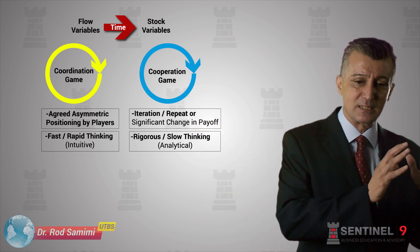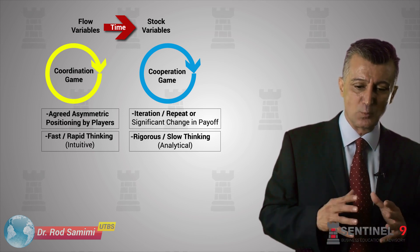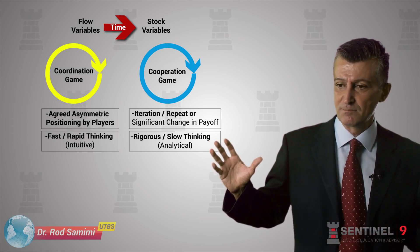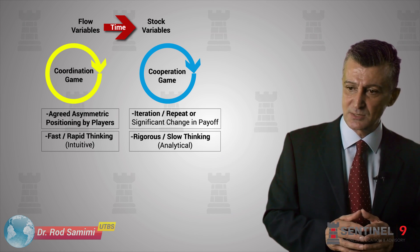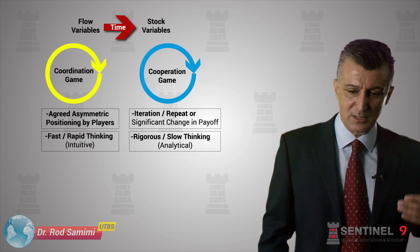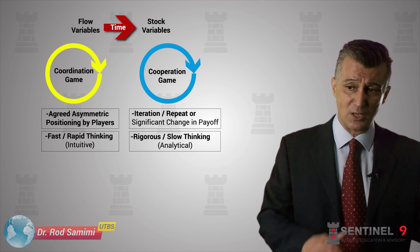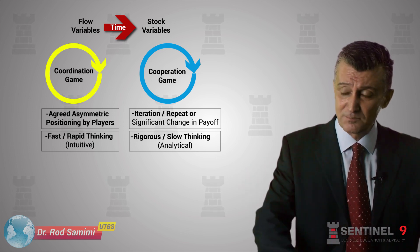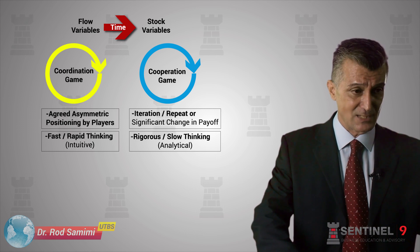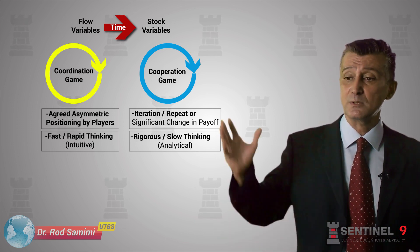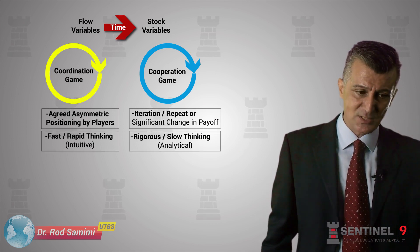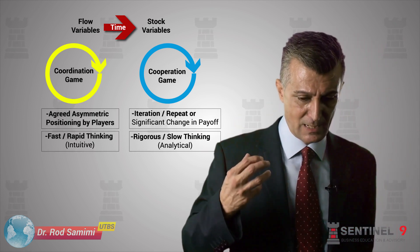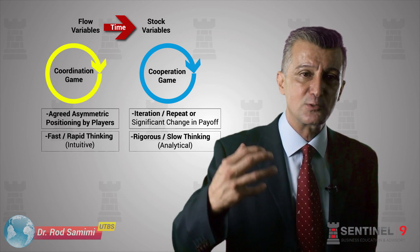What will happen is that the transaction cost of our activities within business and life reduces. Transaction cost economics is a large body of literature by very prominent scholars. Essentially, the resolution of a coordination game reduces one level of transaction cost, and iteration of these games can create cooperative game resolutions that considerably reduce transaction cost through the creation of a stock variable — and creates, as you will see in the future, competitive advantage. We apply fast, intuitive thinking to coordination games, and we apply rigorous, analytical, slow thinking — as the literature says — to cooperative games.